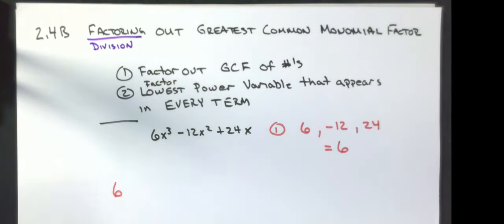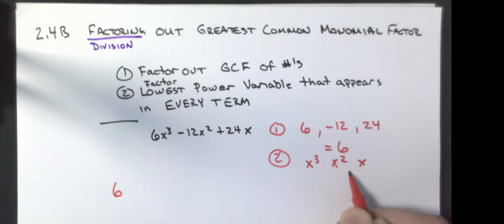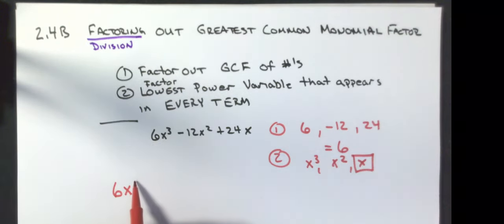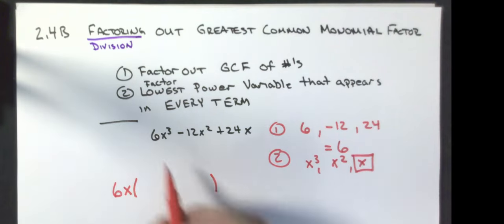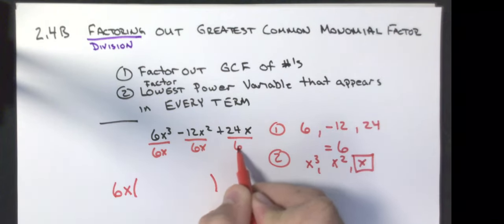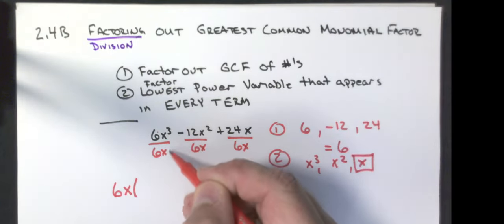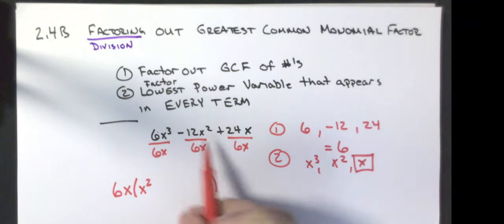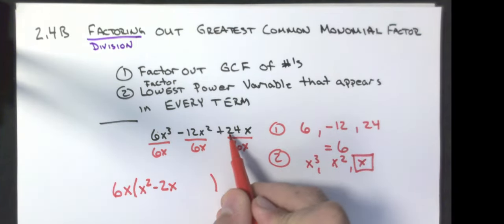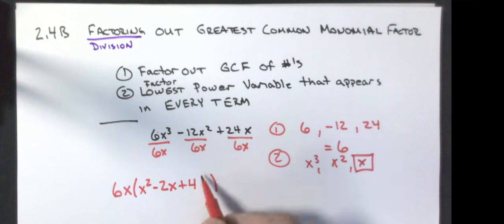I'm going to put a 6 out in front. I have x cubed, x squared, and x — x is the lowest power of x, so that comes out in front too. The way I get what goes in the parentheses is I divide everything by 6x. 6 divided by 6 is 1, and I don't write 1's in front of variables. x cubed divided by x is x squared. Negative 12 divided by 6 is negative 2, and x squared divided by x is x. 24 divided by 6 is 4, and x divided by x is 1, which I don't have to write.